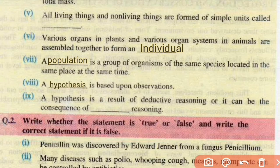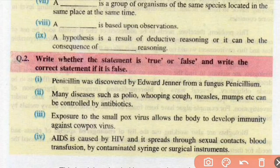No. 9: A hypothesis is a result of deductive reasoning or it can be the consequence of inductive reasoning. Question No. 2: Write whether the statement is true or false and write the correct statement if it is false. No. 1: Penicillin was discovered by Edward Jenner from a fungus penicillium. This is false because penicillin was discovered by Alexander Fleming.